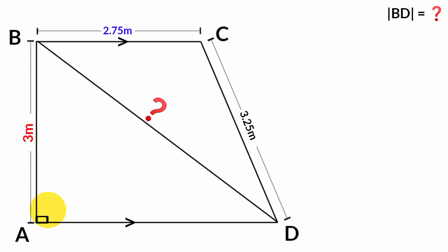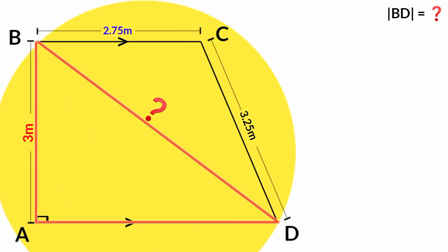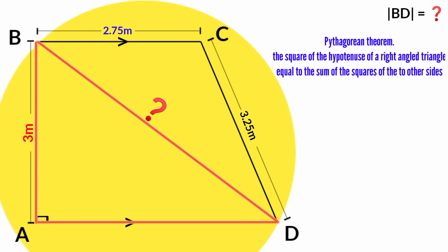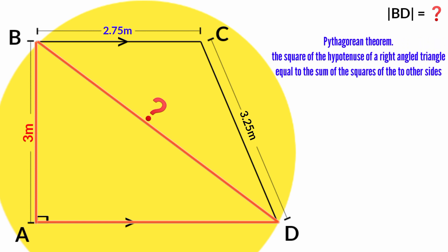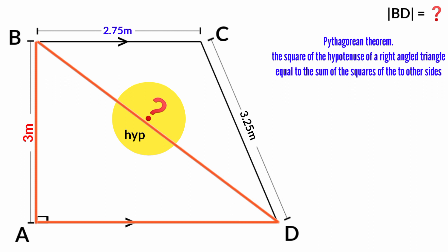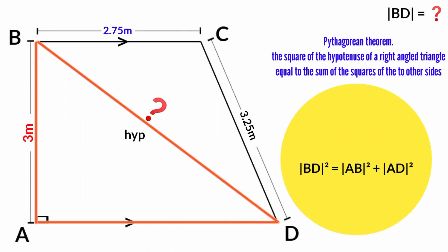Well, since this is a right angle, that implies that triangle ABD is a right angle triangle. According to the Pythagorean theorem, the square of the hypotenuse of a right angle triangle is equal to the sum of the squares of the two other sides. In triangle ABD, BD is the hypotenuse because it is the side facing the right angle. So: line BD squared equals line AB squared plus line AD squared.